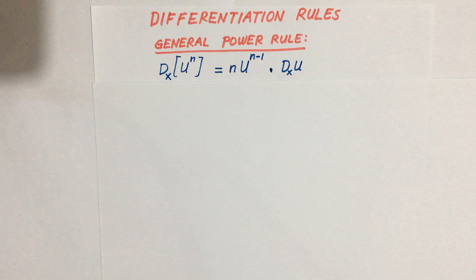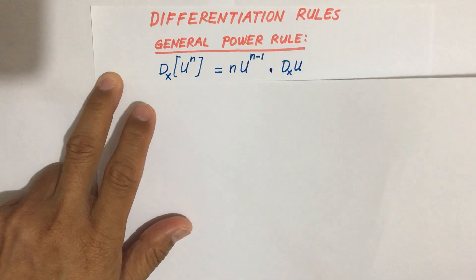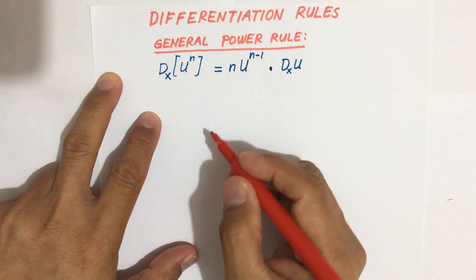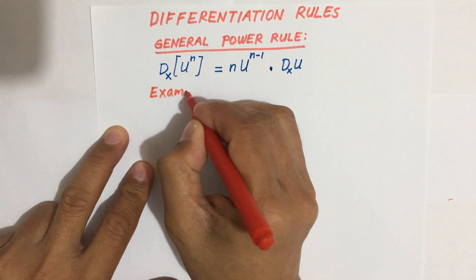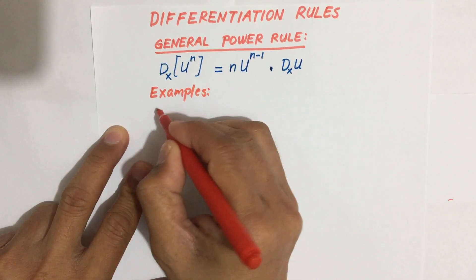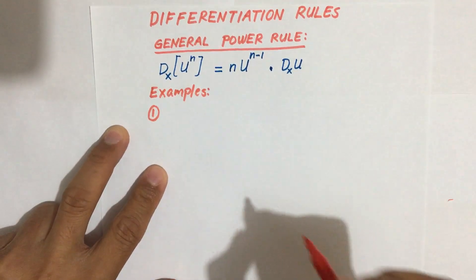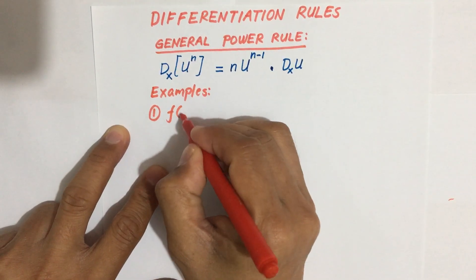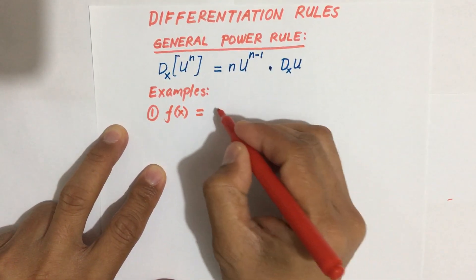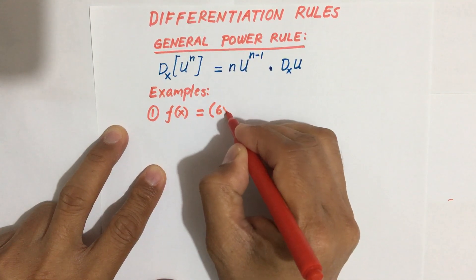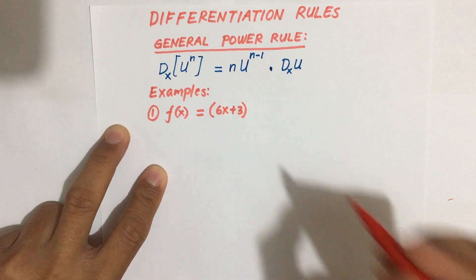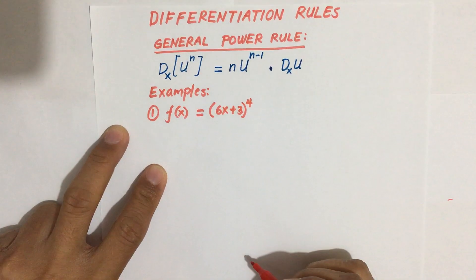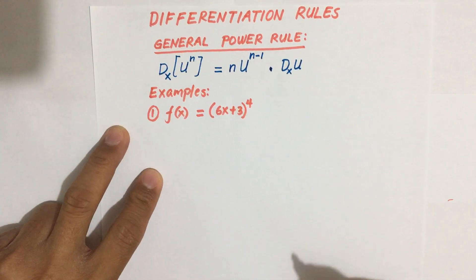To give you an idea on how to use this rule, let us have our first example. We are given the function f(x) equal to the quantity 6x plus 3 raised to an exponent of 4.